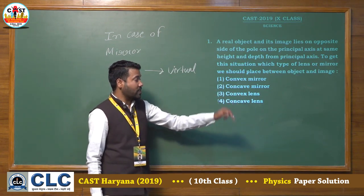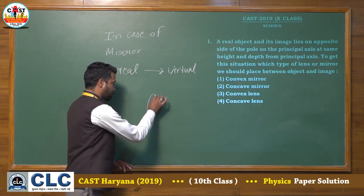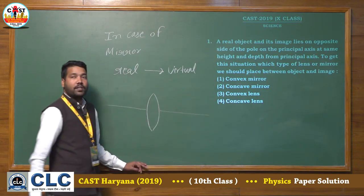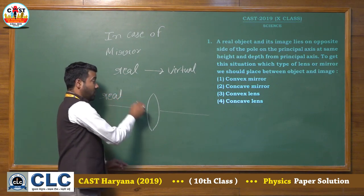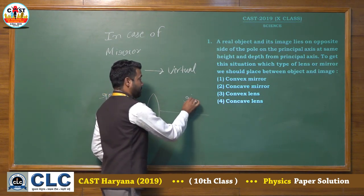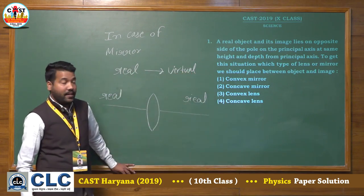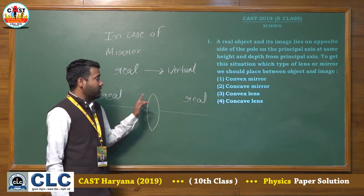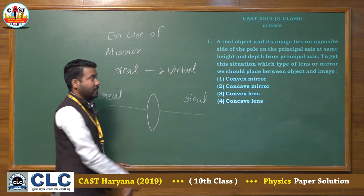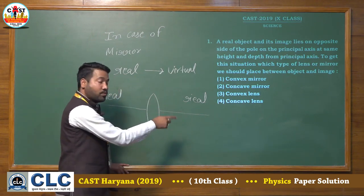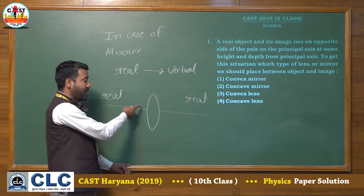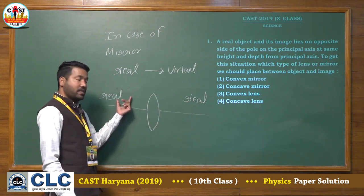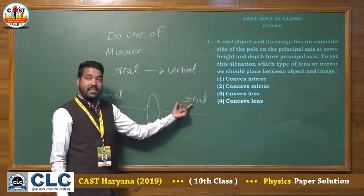Third option is convex lens. When we consider a convex lens and the object is placed on one side and the image is formed on the opposite side, this means both the object and image are real. A convex lens forms a real image of a real object, and that real image is inverted. Since the image must be on the opposite side — which is the case here — convex lens satisfies the condition.